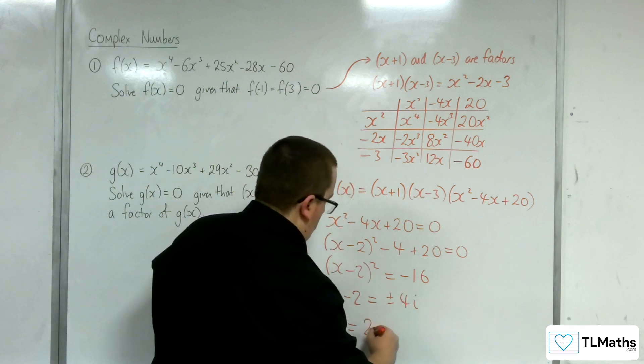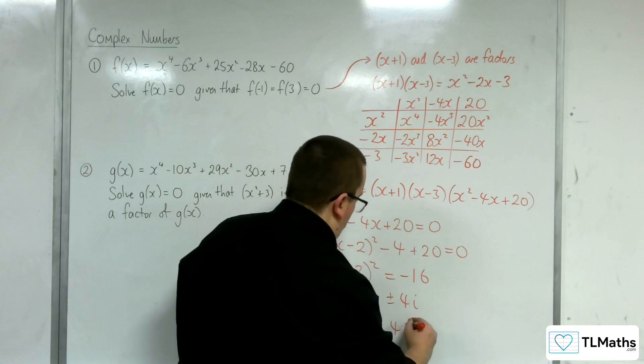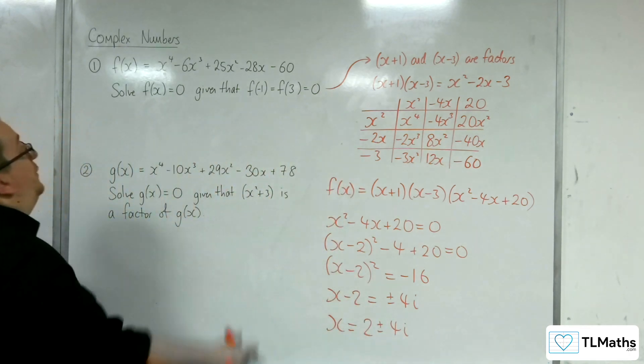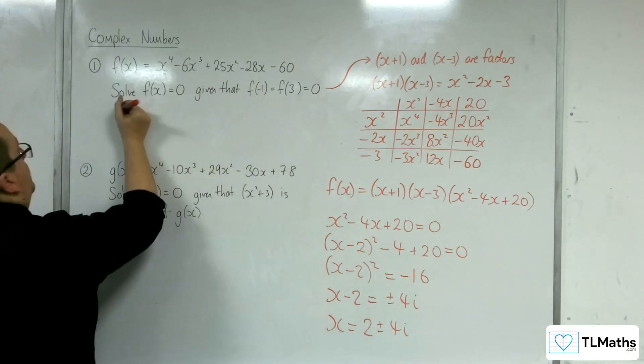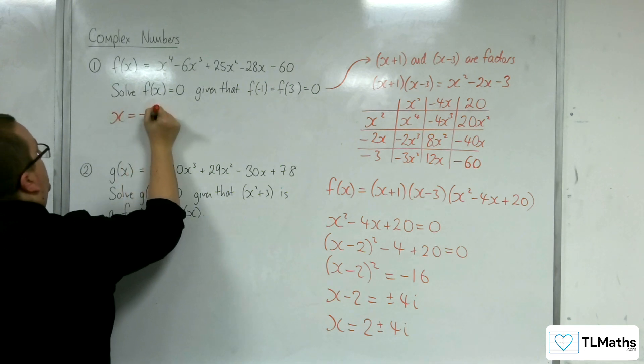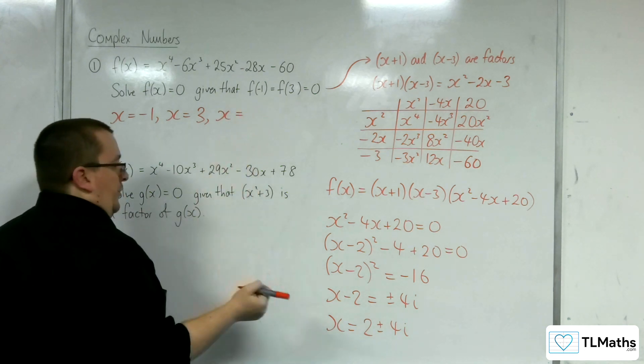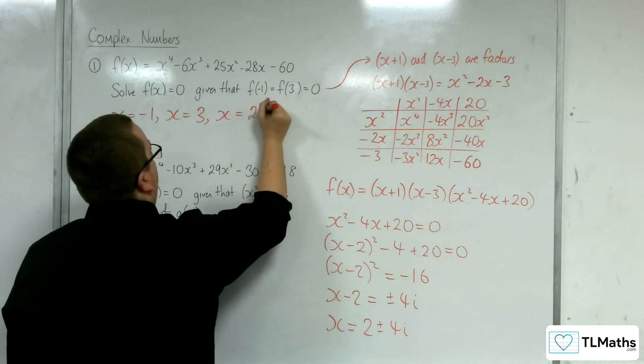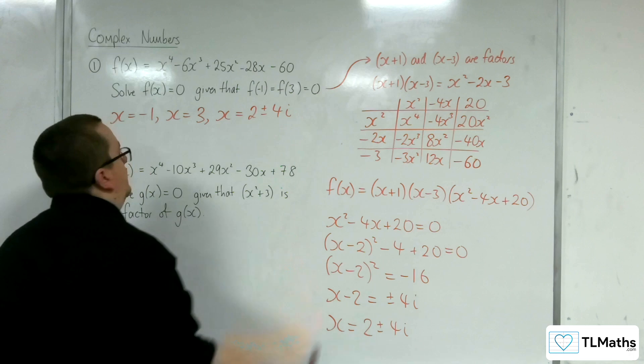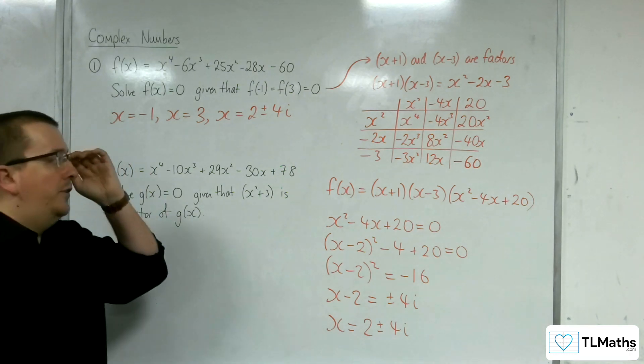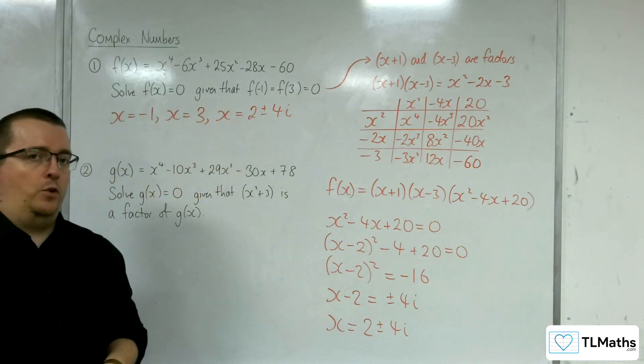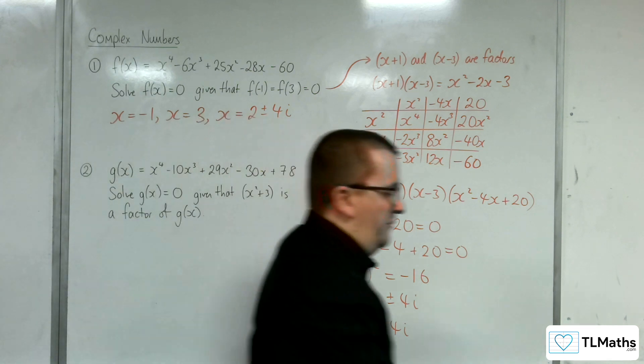So x is 2 ± 4i. So the solutions to f(x) = 0 is x = -1, x = 3, or x = 2 ± 4i. And so that solves the quartic equation, given those two bits of information.